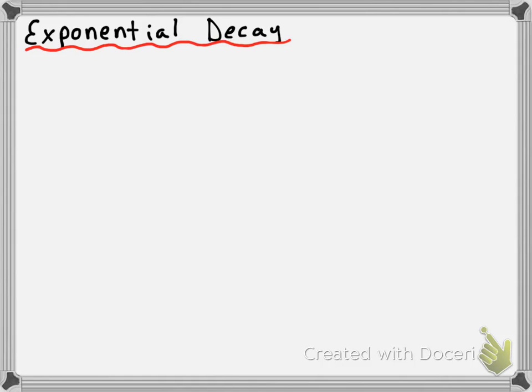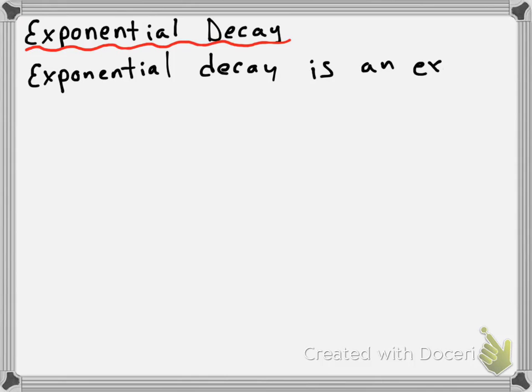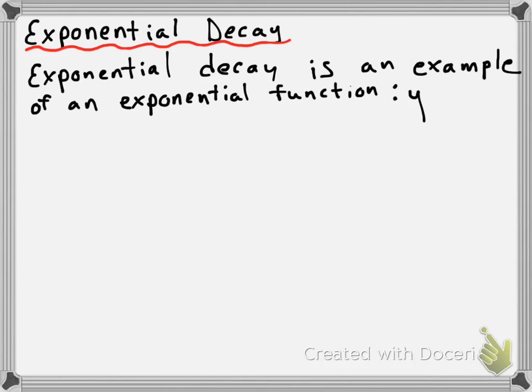So in class today, we talked about how exponential decay is an example of an exponential function. We brought up exponential functions yesterday when we were talking about exponential growth. So it's going to follow the same kind of format for the equation — it's going to be y is equal to a times b to the power of x. That's an exponential function.